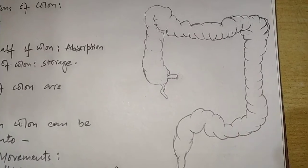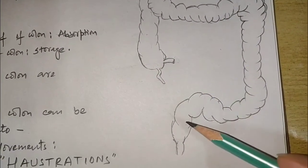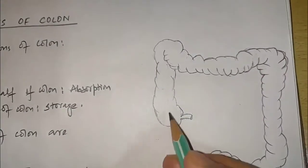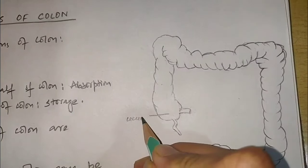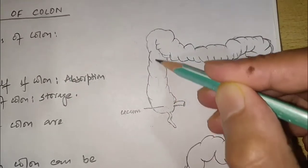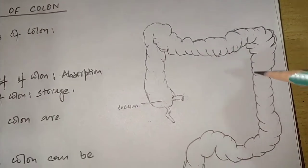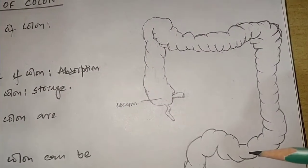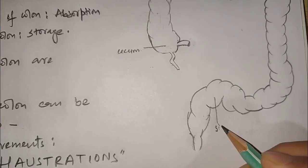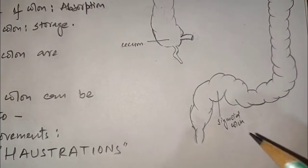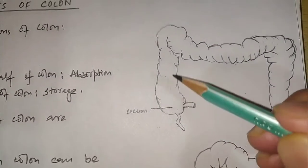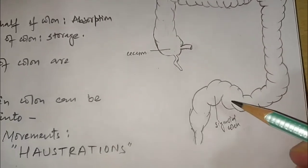Large intestine is divided into three parts: colon, rectum, and anus. Colon itself is divided into five parts: cecum, ascending colon, transverse colon, descending colon, and sigmoid colon. After sigmoid colon there is rectum and anus.